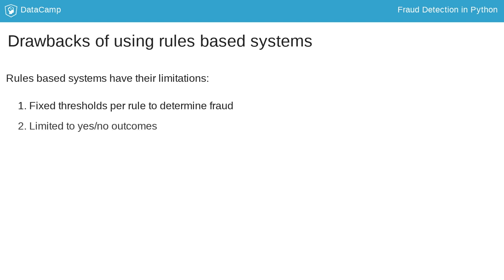With a rule you get a yes or no outcome, unlike with machine learning where you can get a probability value. With probabilities, you can much better fine-tune the outcomes to the amount of cases you want to inspect as a fraud team. Effectively, with a machine learning model you can easily determine how many false positives and false negatives are acceptable, and with rules that's much harder.